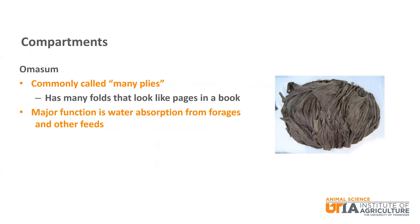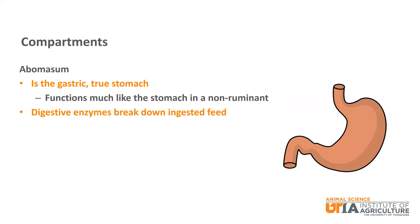Next is the omasum, which is commonly called many-plies because it looks like pages in a book. The major function of the omasum is water absorption. The fourth and final compartment is the abomasum. The abomasum is the compartment that functions much like the true gastric stomach of a non-ruminant. Digestive enzymes break down ingested feed here.